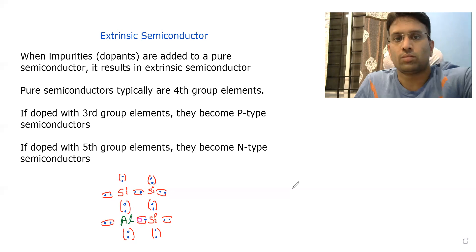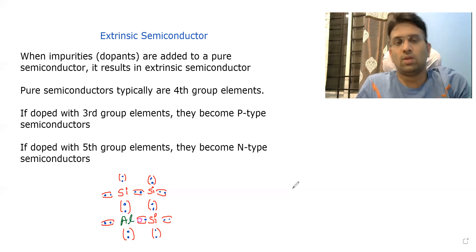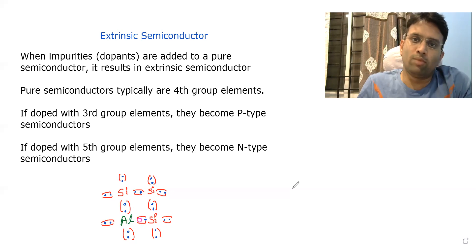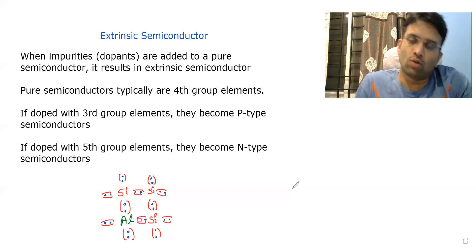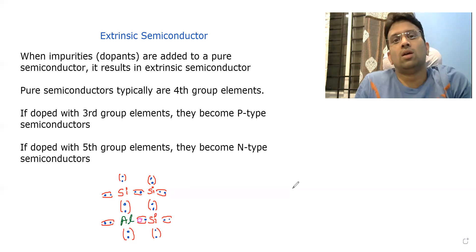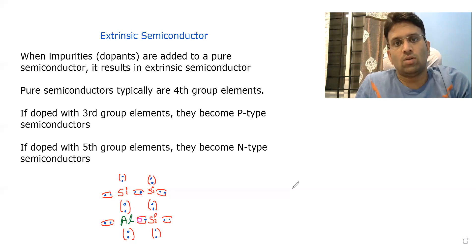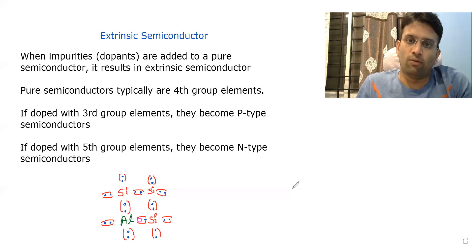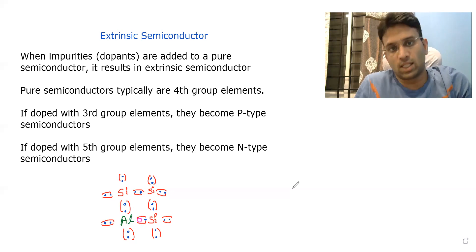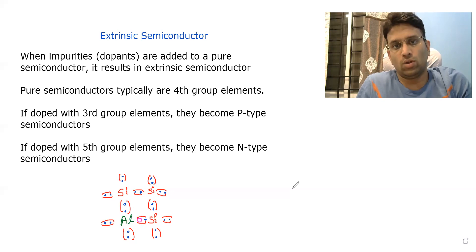Typically, what is the concentration of aluminium versus silicon? Maybe one in a million silicon atoms will have one aluminium. So for one million silicon atoms, you have one impurity — that is aluminium. That is typically the ratio, and you should understand that, as it will be helpful for the next discussion.